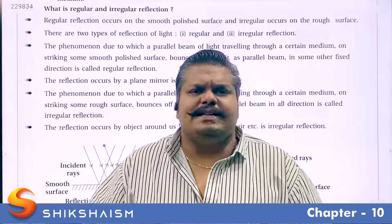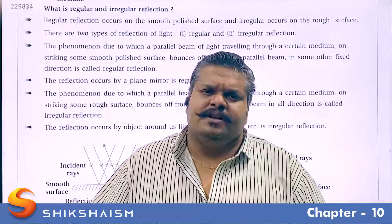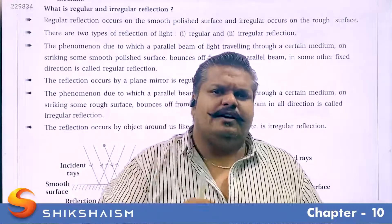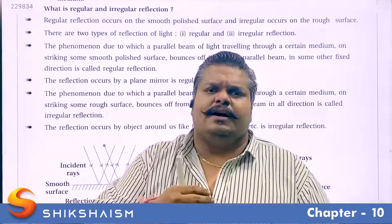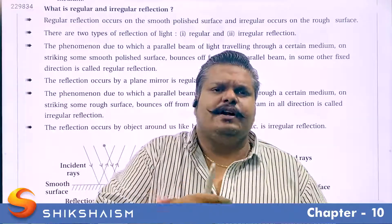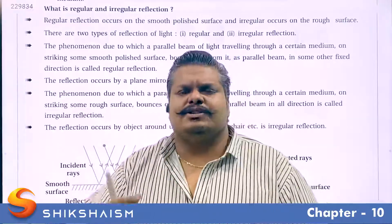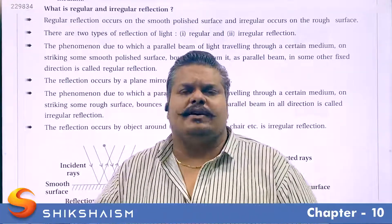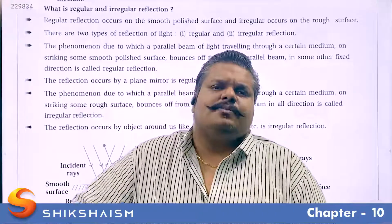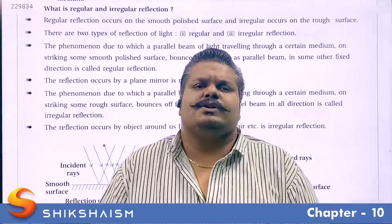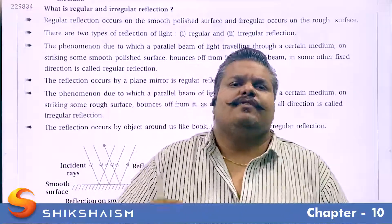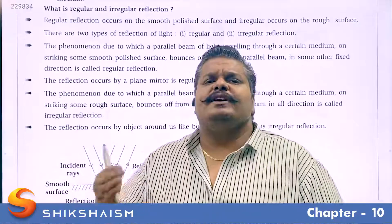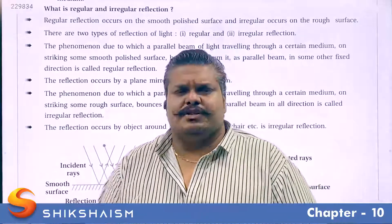When a parallel beam of light reflects from a smooth or shiny surface, the reflected rays are traveling in the same direction and are also parallel to each other. This type of reflection is called regular reflection. Now, what is the meaning of irregular reflection?